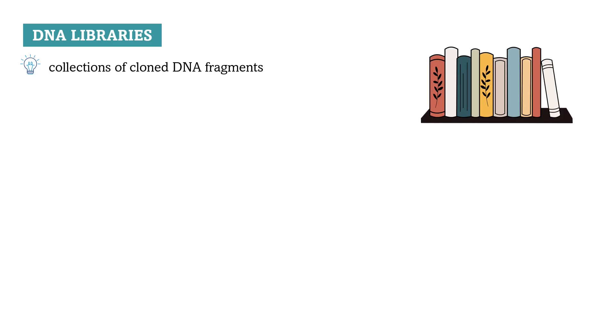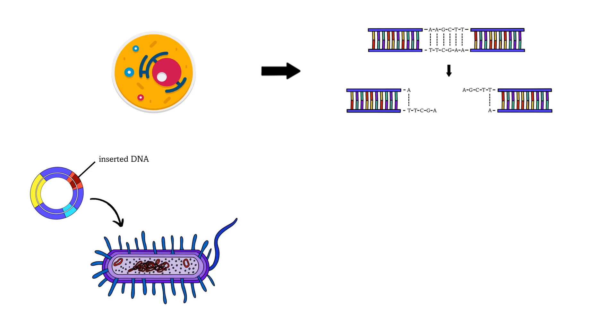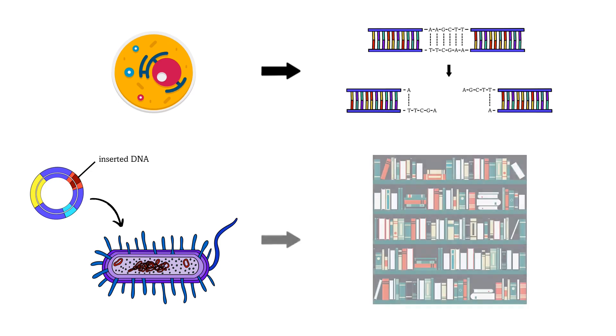DNA libraries are collections of cloned DNA fragments. Imagine that we isolated all of the DNA from human cells, cut it into fragments, inserted into cloning vectors and then let them clone in bacterial cells. That way we would get a DNA library.